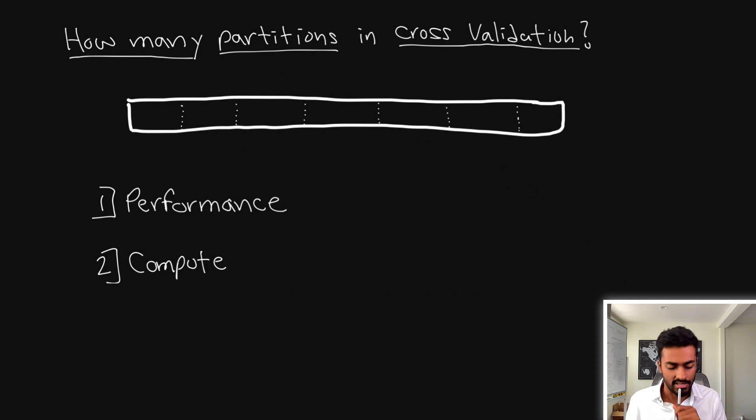Now another question that you might be thinking is how many partitions do we really need to use in cross validation? In fact we can just have two partitions. One that's used for training and one that's used for evaluation. Or we can split this entire data set into partition such that every sample is its own partition. And this is the idea behind a specific case of cross validation called leave one out cross validation.